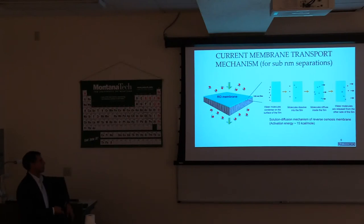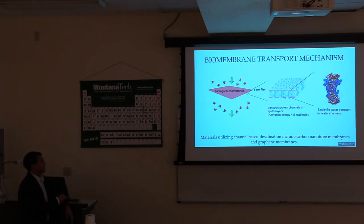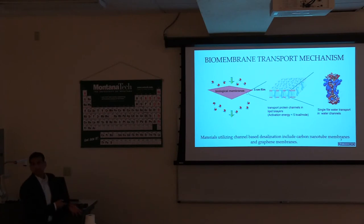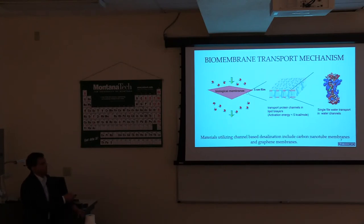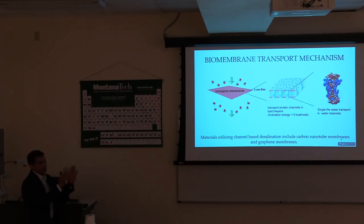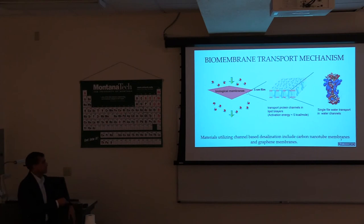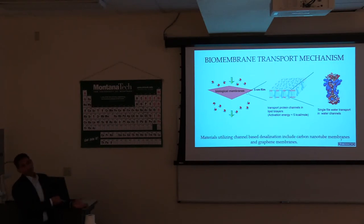Water diffusion is random — it doesn't go only in one direction. It goes every which way before it gets out. If you look at biological membranes, first of all, it's a very thin film — not 100 or 200 nanometers but five nanometers. It also has specific channels: a hole that only allows one molecule of water to go through. The activation energy is only five kilocalories per mole — almost barrierless transport. For proteins like aquaporins, the water channels that transport water in our body, it's single-file water transport and the inside of these proteins is very hydrophobic, so water doesn't stick to the wall and can go through in a frictionless manner. This idea of using channels for desalination is becoming popular using carbon nanotubes, graphene membranes, and biomimetic membranes.